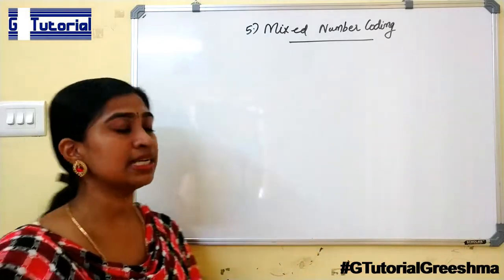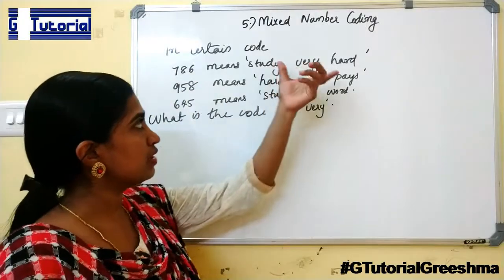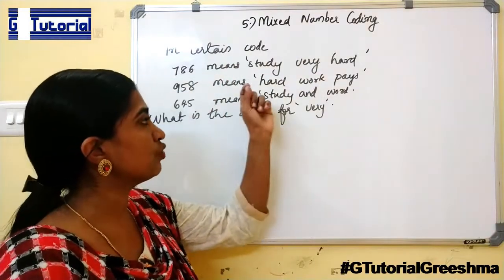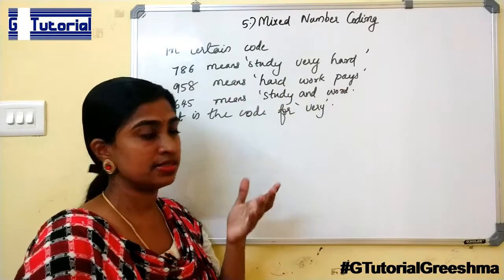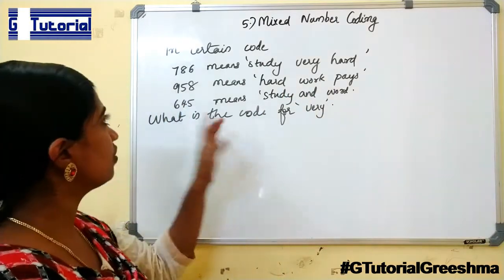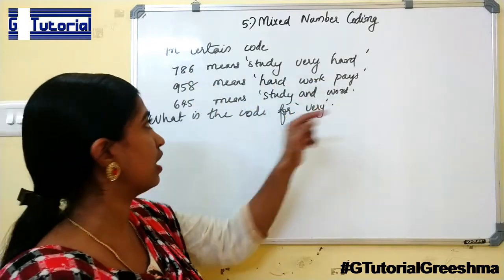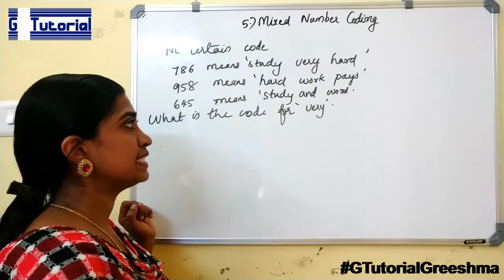The fifth model is Mixed Number Coding. Here, you will be given a question, that is a sentence, and its code will be a number. You will be asked to find the code for any of the words in that sentence. So here, 786 is the code for study very hard, 958 means hard work pace, 645 means study and work.